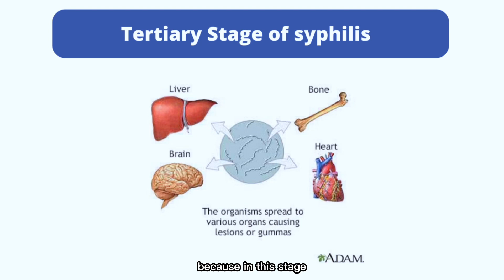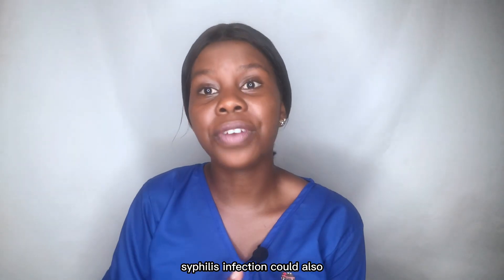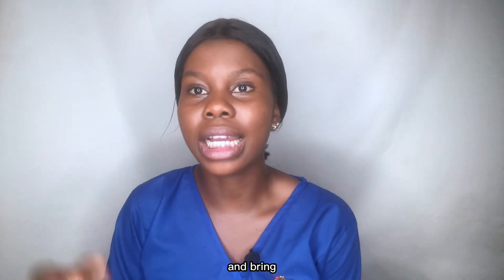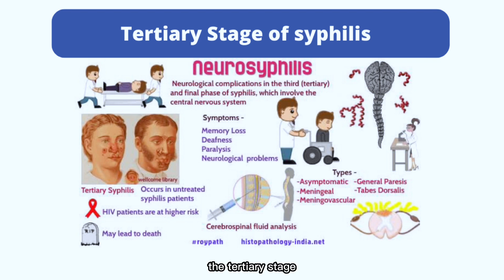The tertiary stage is the most dangerous stage of syphilis. It can occur 10 to 30 years after the first infection and involves slow, progressive inflammation and breakdown of organs. The syphilis infection can also enter the brain and bring about neurological symptoms such as psychosis, dementia, stroke, and even meningitis. So the tertiary stage is the most severe stage of syphilis.